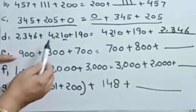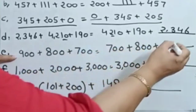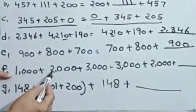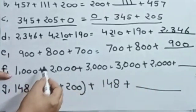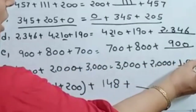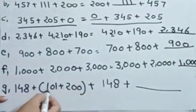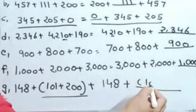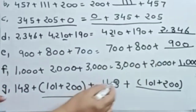Next: 900 plus 800 plus 700. 700 is here, 800 is here, so the missing number is 900. Then 1,000 plus 2,000 plus 3,000: 3,000 is here, 2,000 is here, which number is missing? 1,000. Now look at this column: 148 equals 101 plus 200 — which column is missing? So do it like that.